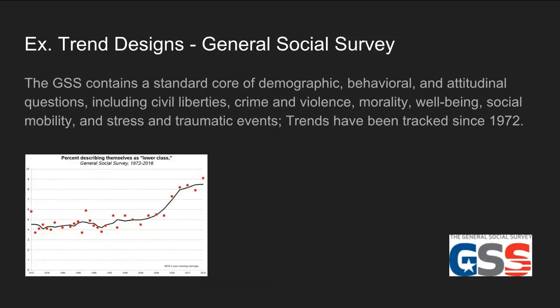An example of a trend design is the General Social Survey, which is one of the most popular surveys for sociological analysis. What makes the GSS a trend design is that they have a standard core questionnaire asked every year. This standardized core includes demographic, behavioral, and attitudinal questions, including those about civil liberties, crime and violence, morality and well-being, social mobility, and even stress and traumatic events. By asking these same questions repeatedly year after year, researchers can look at trends going back to 1972 up until the current day.